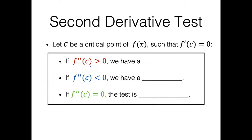Let's formally tabulate everything we've learned so far. Let C be some critical point of our function. There's a small but important detail: the first derivative has to be equal to zero at this critical point. You might remember that the definition of a critical point also includes places where the first derivative is undefined. So f prime of x must be defined here — if it's not defined, the second derivative test breaks down and we can't use it.